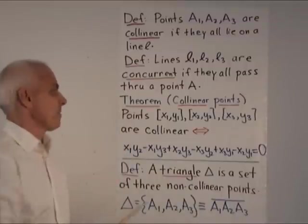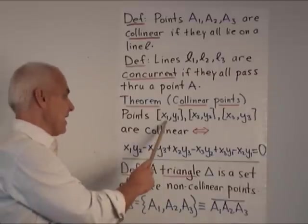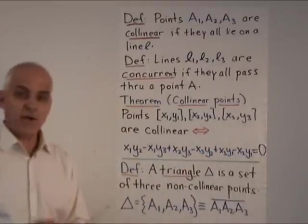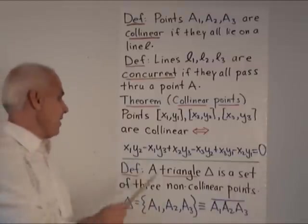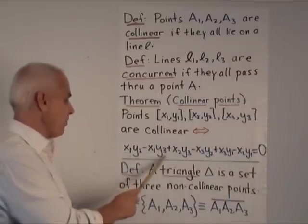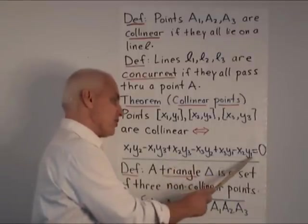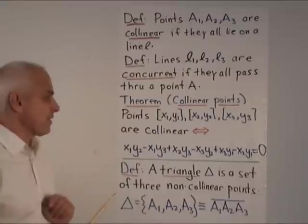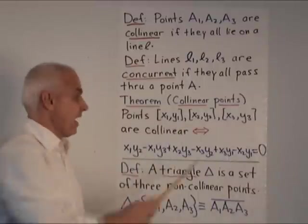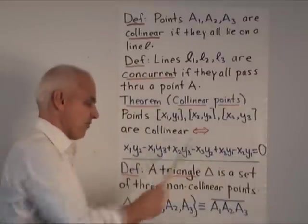Now there's a theorem, the collinear points theorem, that tells us exactly when three points are collinear. It states that the three points with coordinates [x₁,y₁], [x₂,y₂], and [x₃,y₃] are collinear precisely when this quantity is zero. This quantity is x₁y₂ - x₁y₃ + x₂y₃ - x₃y₂ + x₃y₁ - x₂y₁. The proof is an exercise using the fact that we can calculate the join of these two lines and then figure out when this point lies on the join of these two lines. You get exactly this expression.